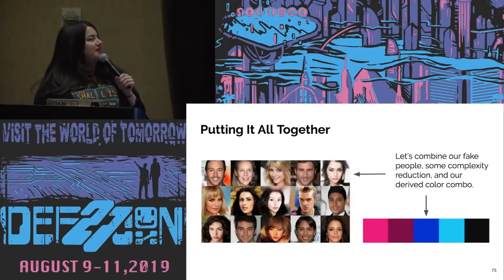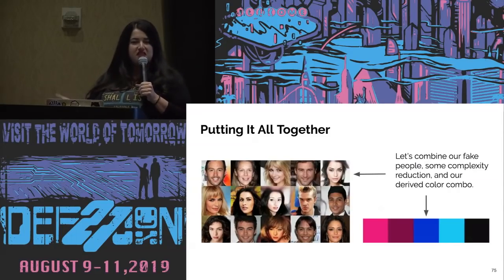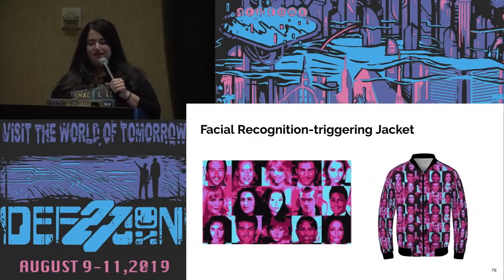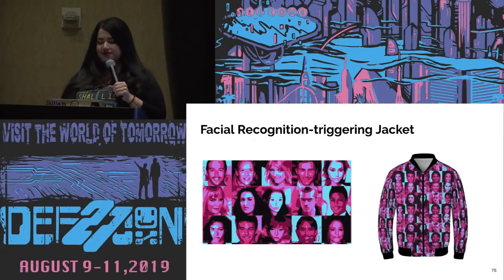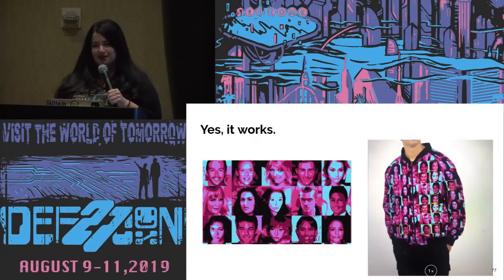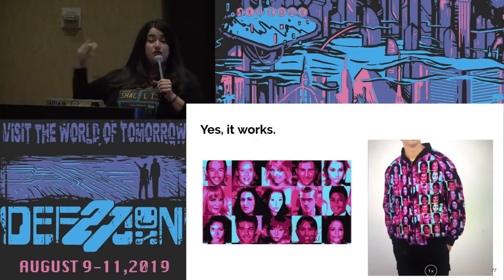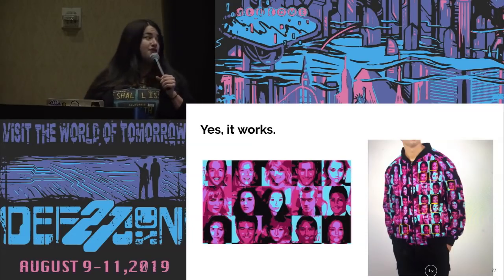To put it all together: take fake faces, do some complexity reduction, derive a color combination from prior art, and you get a facial-recognition-triggering jacket. Apple's facial recognition on the image on the jacket does actually do what it's supposed to. You can continue reducing noise and improving simplicity until it stops working — that gives you information on how to make a pretty snappy pattern.